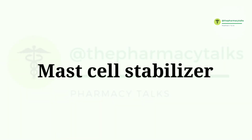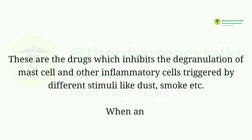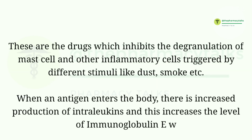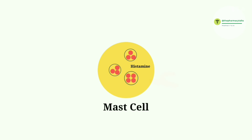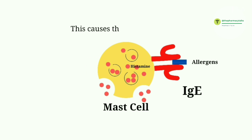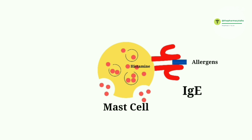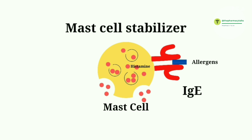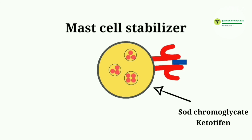Now we'll discuss the mechanism of action of mast cell stabilizers. These drugs inhibit the degranulation of mast cells and other inflammatory cells triggered by stimuli like dust and smoke. When an antigen enters the body, there is increased production of interleukins, which increases immunoglobulin E levels that bind to mast cells. When allergens bind with immunoglobulin E on mast cells, degranulation occurs and histamine or other mediators are released. This causes airway hyperactivity and bronchoconstriction, resulting in asthma. Mast cell stabilizers inhibit this degranulation process, preventing the release of histamine. Drugs in this class are sodium cromoglycate and ketotifen.